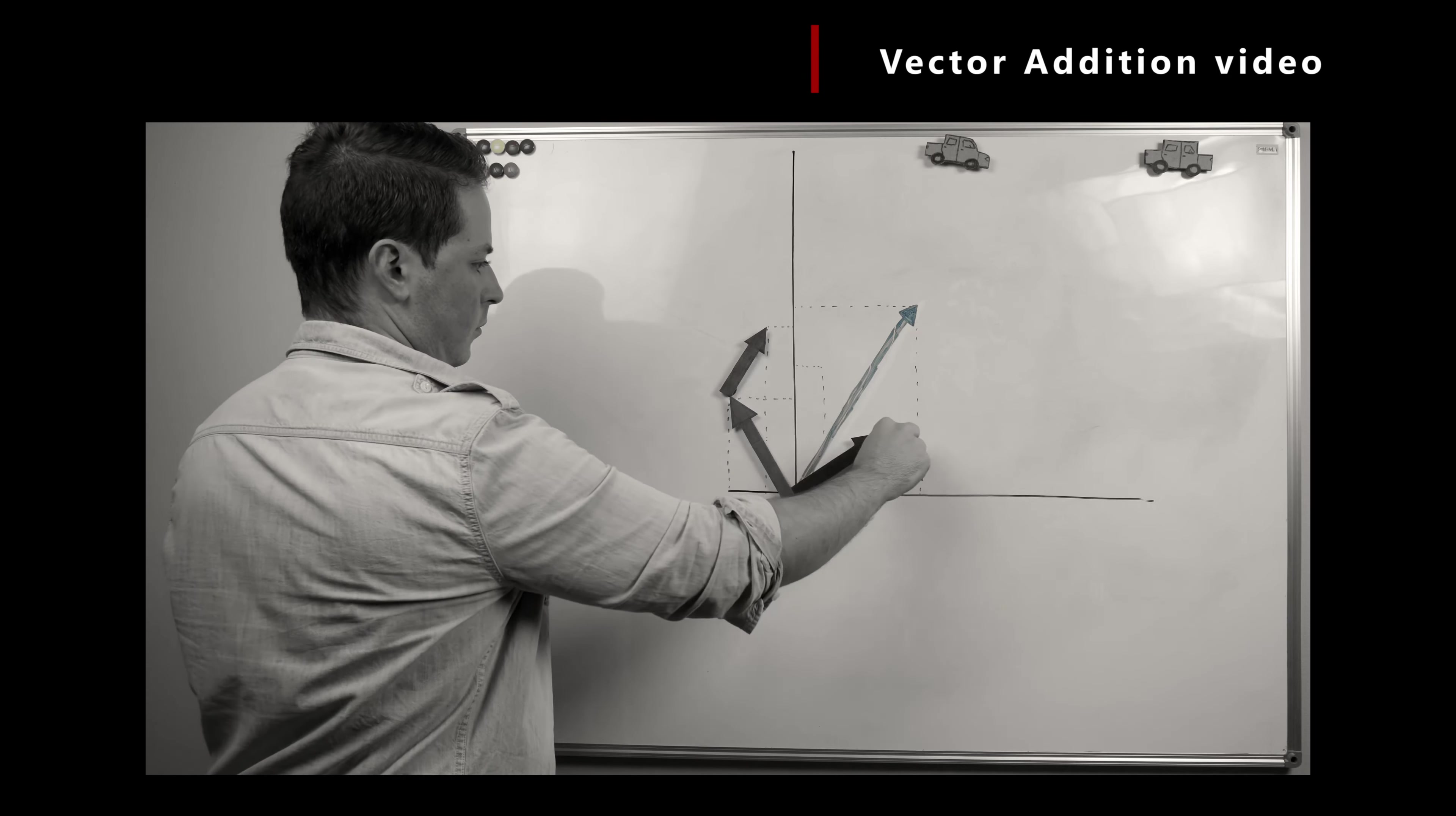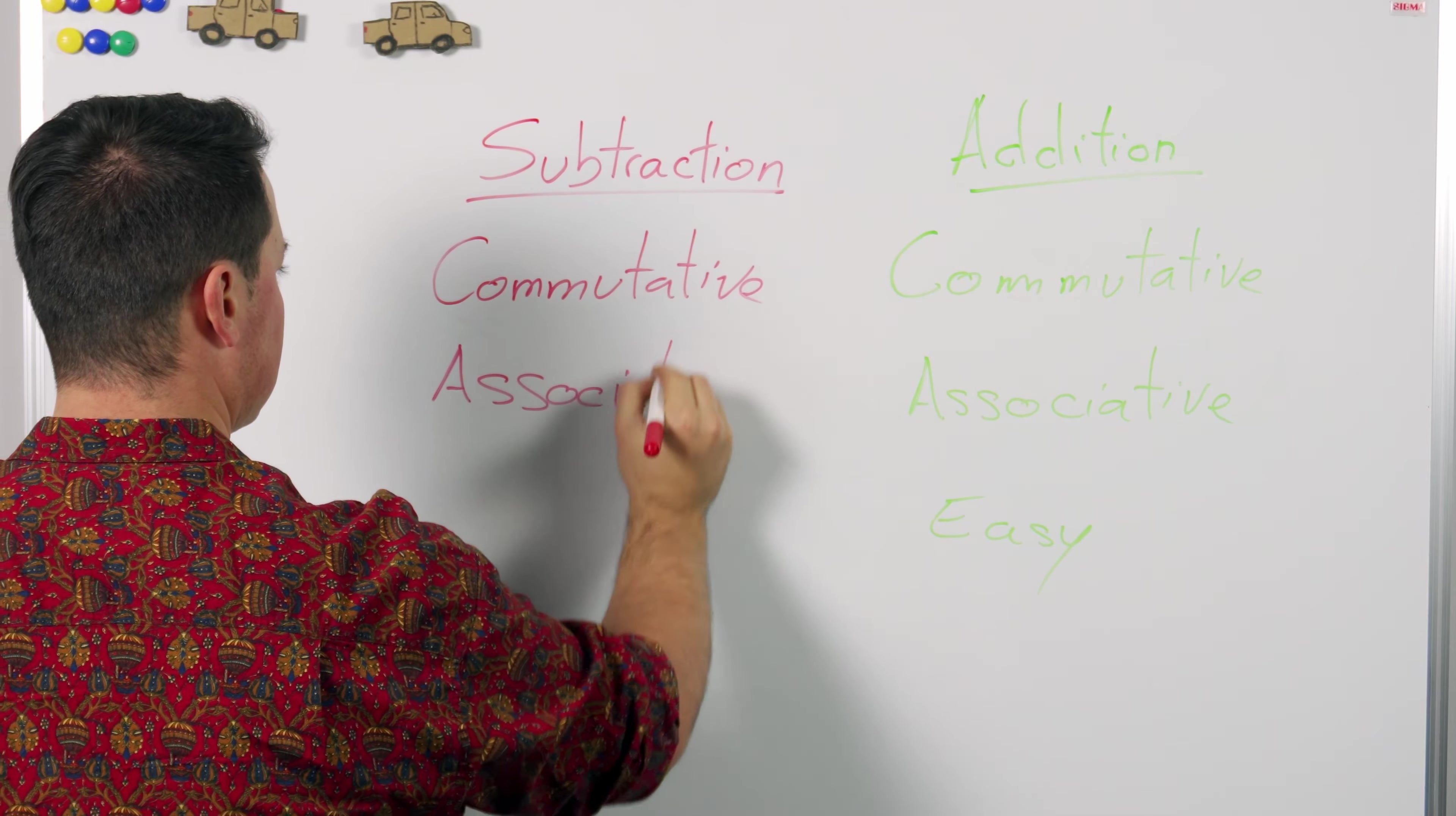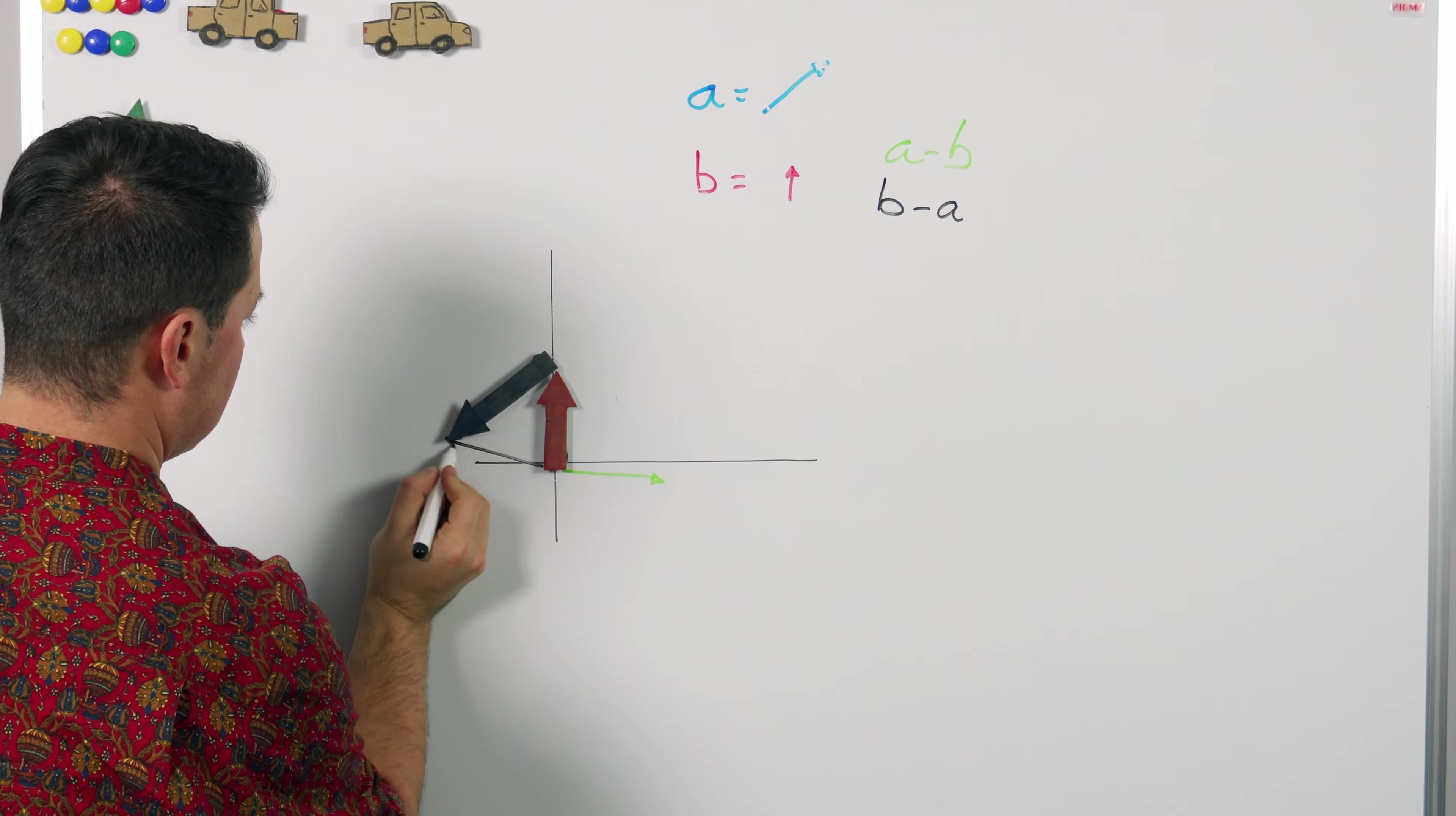Vector addition and vector subtraction differ in more ways than one. As we saw before vector addition is commutative and it's also associative. Vector subtraction however is neither of those. It's not commutative because a minus b is not the same as b minus a. In fact they are opposites of each other.